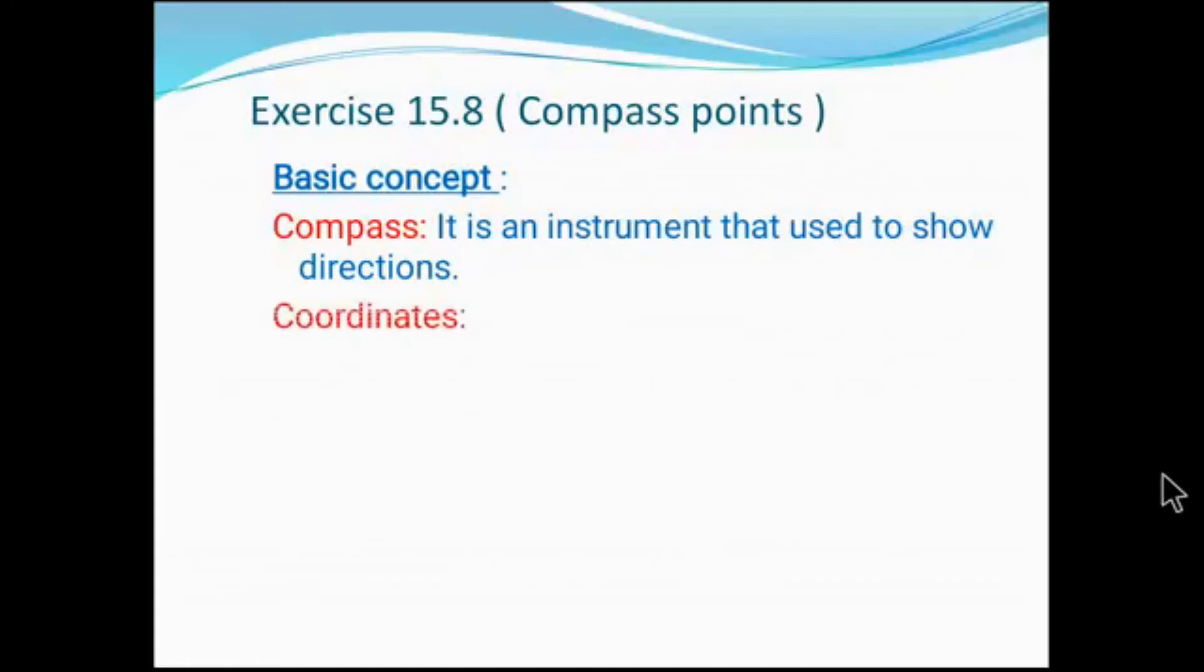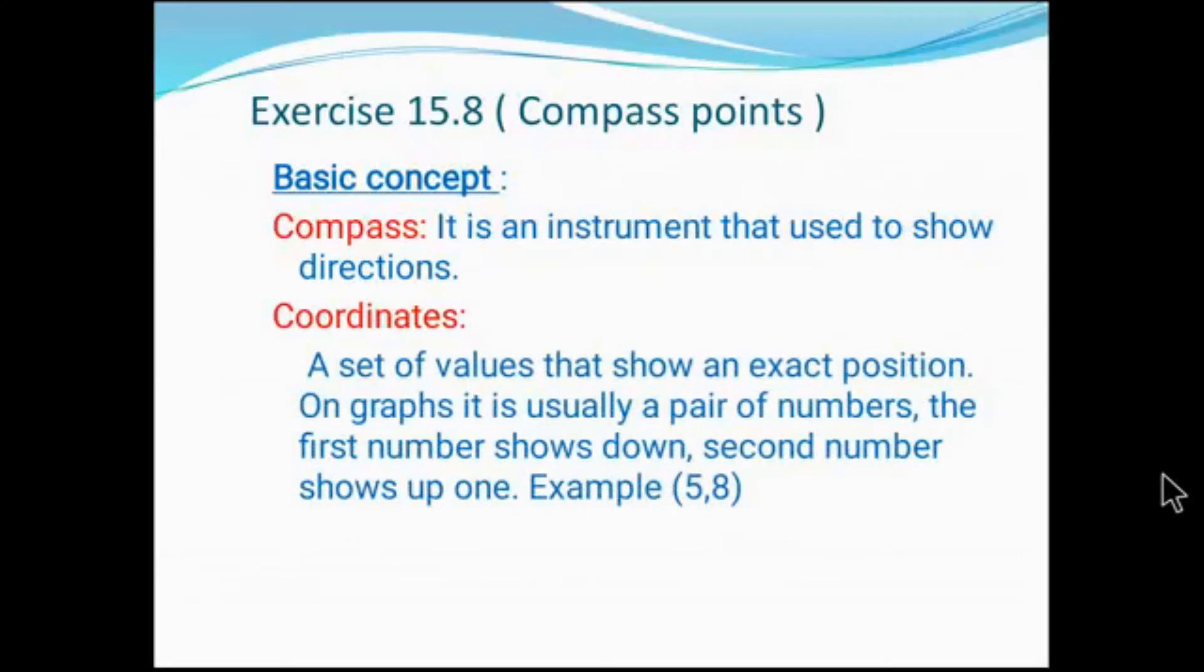Now coordinates. What is coordinates? We can tell it's a set of values that shows exact positions on graph. It is a pair of numbers. Look at that going down. I have given (5,8). Five is the basement number. First number is always the down number, so five is our basement number. The second number is our up number.